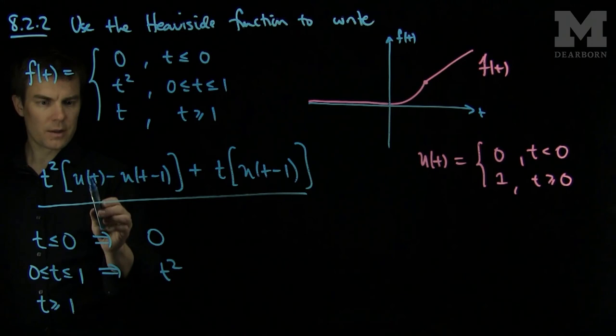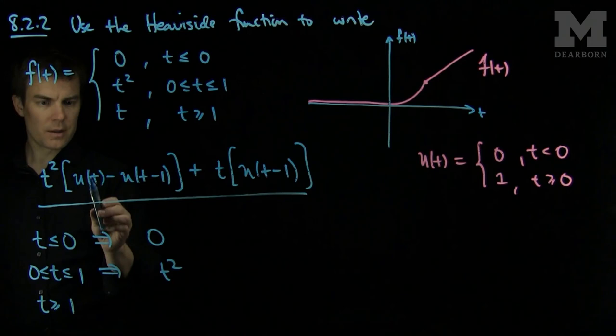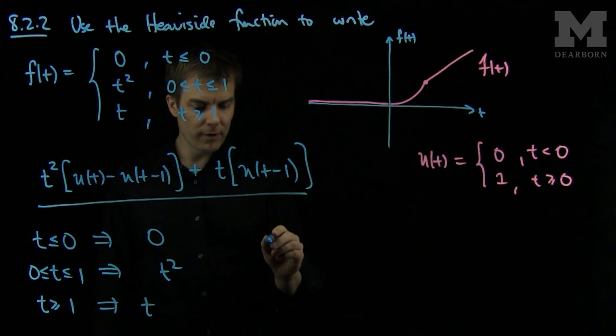And if t is bigger than or equal to 1, this term is 1, this term is 1, so this term over here is 0, and this term over here is 1, so we will get a t.